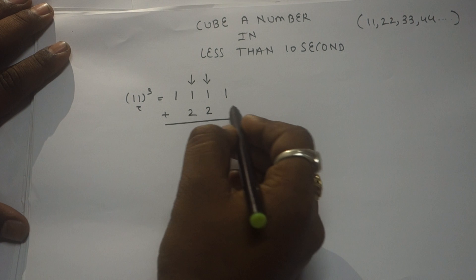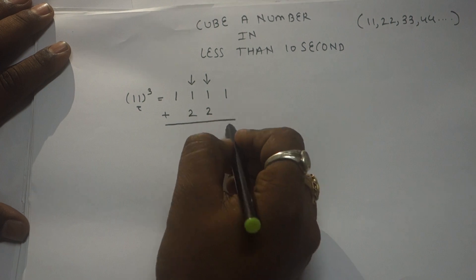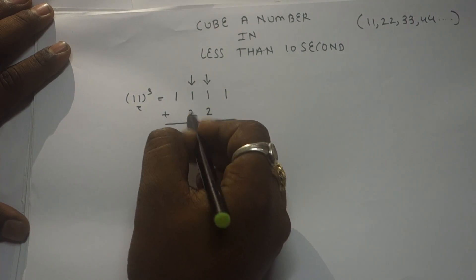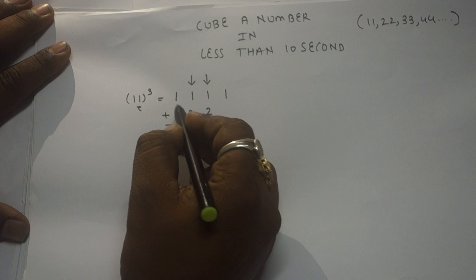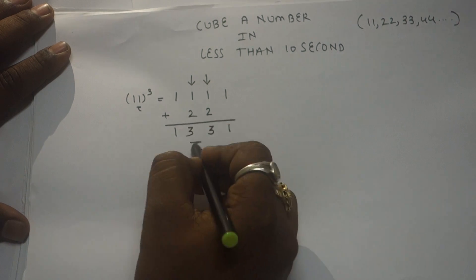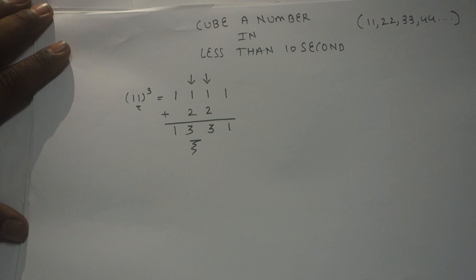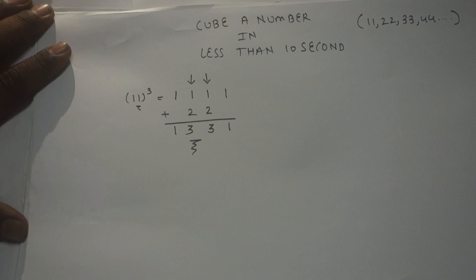Step three: add the numbers. 2 plus 1 is 3, and 2 plus 1 is 3, and this is 1. So we got the answer — 11 cubed is 1331. When you multiply 11 × 11 × 11 you will get 1331. I hope you understood the first example.